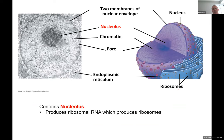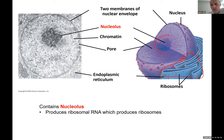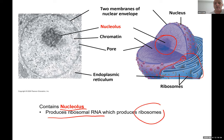In a picture of the nucleus you can see how the nuclear membrane extends outward, forming channels all the way to the cell membrane — those are called the endoplasmic reticulum. The region inside where most DNA is found is called the nucleolus. The nucleolus produces ribosomal RNA, which eventually becomes the ribosomes.